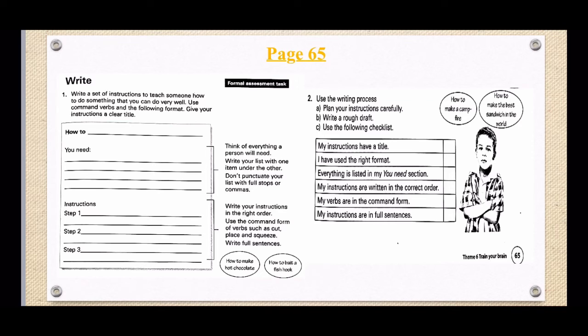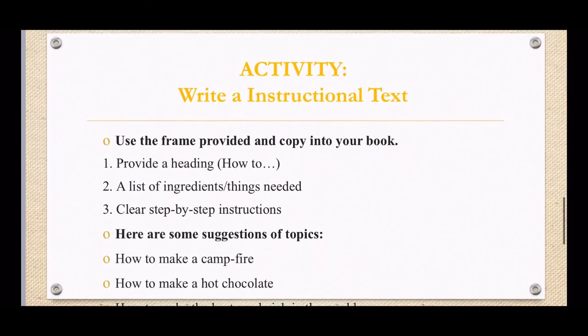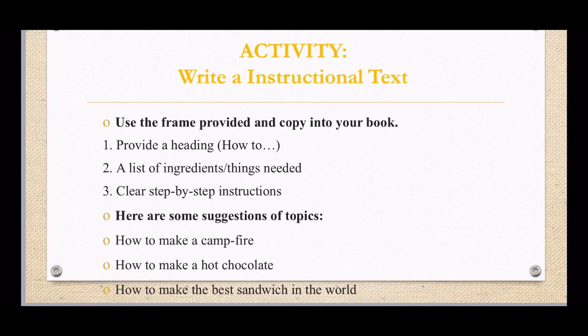So here in the little bubbles are some examples of how to's. But we will get to that in the next slide. So here I just summarized everything about the activity. So you need to write an instructional text. So like we went over on page 65, you need to use that frame, that little block that they gave you and copy that into your workbook. You need to provide a heading, how to. And your how to, you can pick anything. It must just be appropriate and it mustn't be long, something long or difficult to do. Number two, your you need, which is a list of all your ingredients and things that you will need. And then lastly, your instructions, which is a clear step-by-step instruction. So your step one, step two, step three.